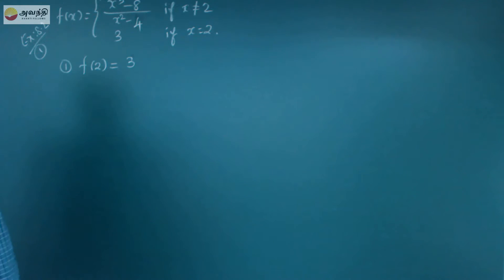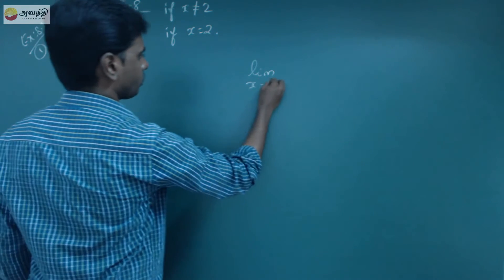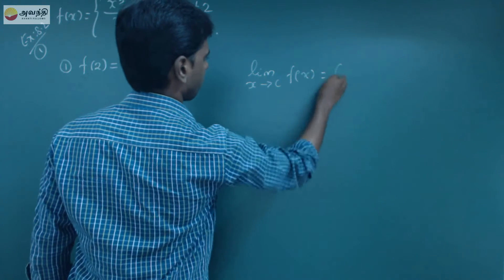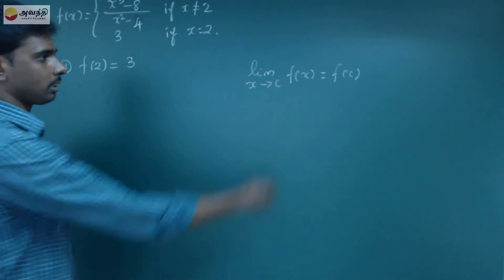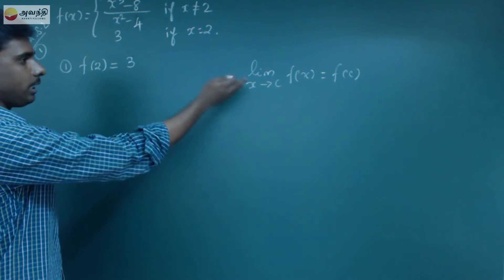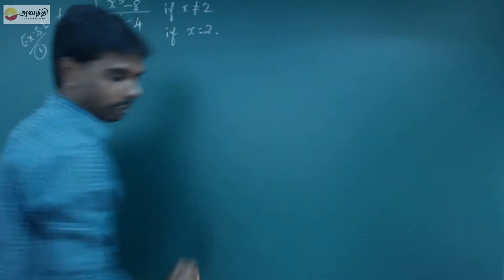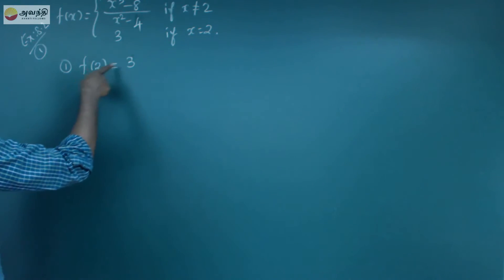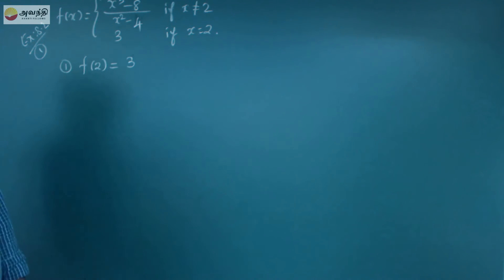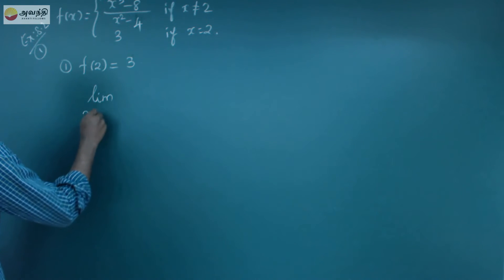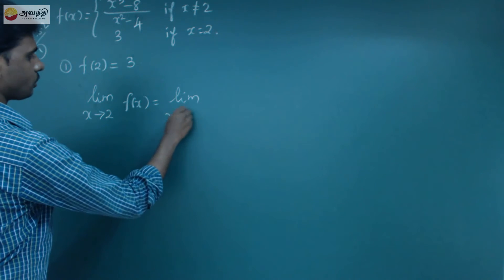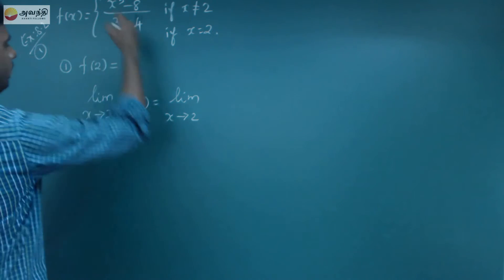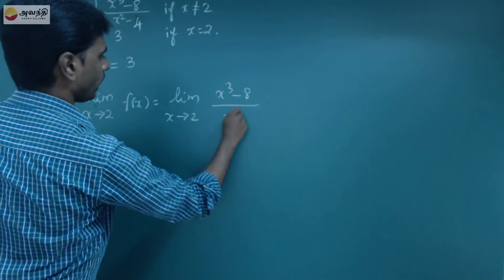We will check at x=2. Next, we need to prove that the limit as x tends to c of f(x) is equal to f(c). We check f(2) equals 3, and f(c) equals 2, so we evaluate the limit as x tends to 2 of f(x), which is (x³-8)/(x²-4).